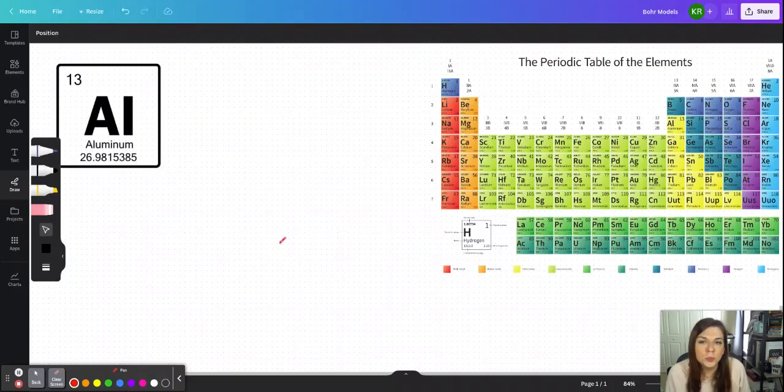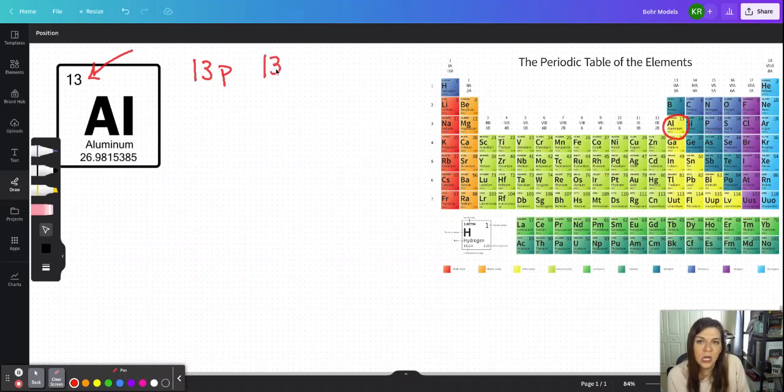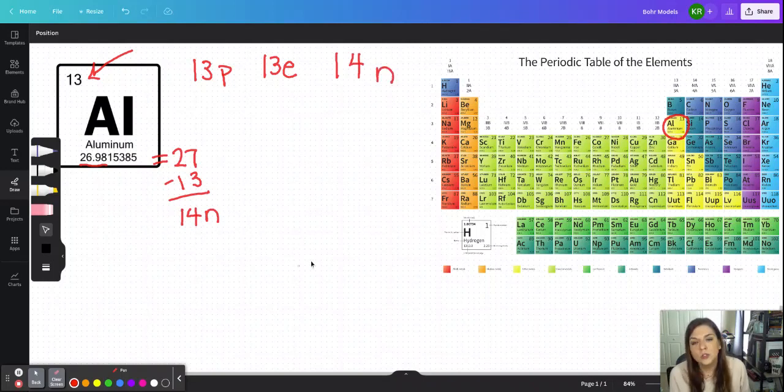All right, we're going to look at aluminum, which is another member of group 13 right here. We know that aluminum will have 13 protons. It'll also have 13 electrons. And then we need to take this to figure out the number of neutrons. So I'm going to round that to 27. I will subtract the 13 protons. And that will leave me with 14 neutrons.